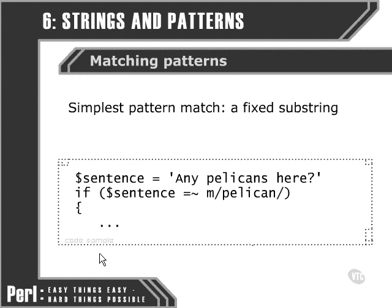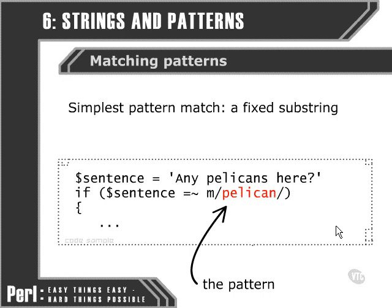Now at first glance, it can look like we're seeing if the sentence variable and the word pelican are equal. But in fact, this operator here is not the equality operator — it's the pattern matching operator. And that's what we use when we're going to compare our larger string with a pattern of which we want to find instances. This matches operator tells Perl to look to the right of it for the pattern, which we're going to search for within the larger string.